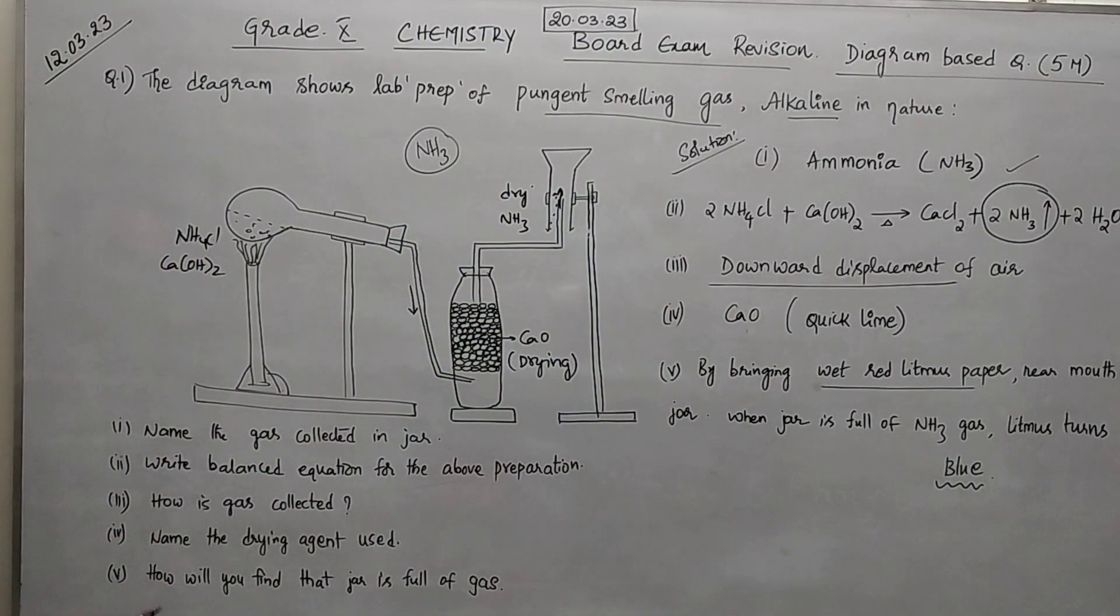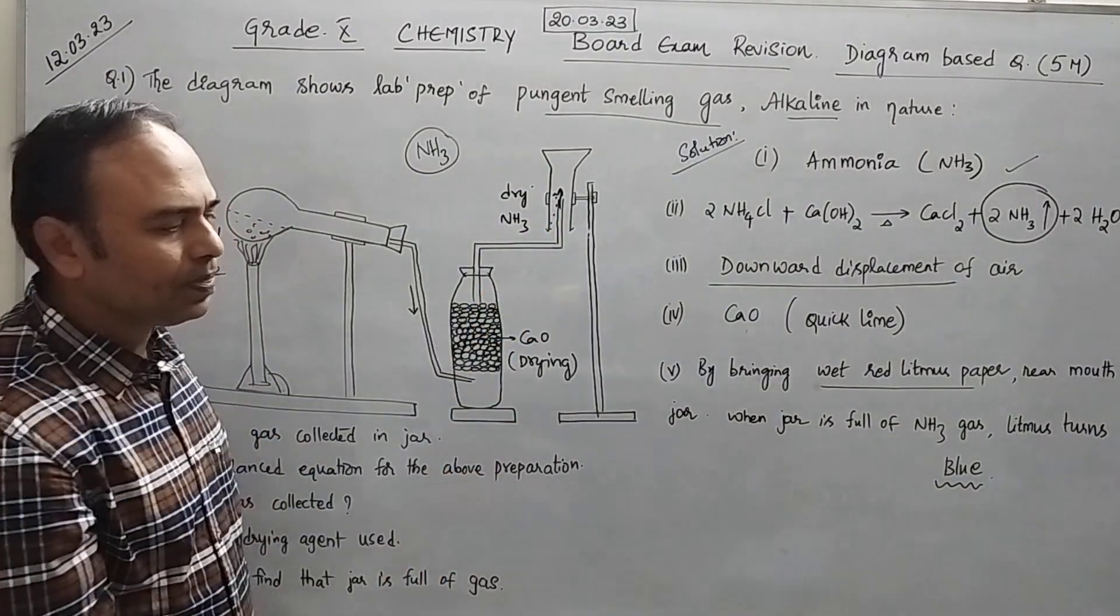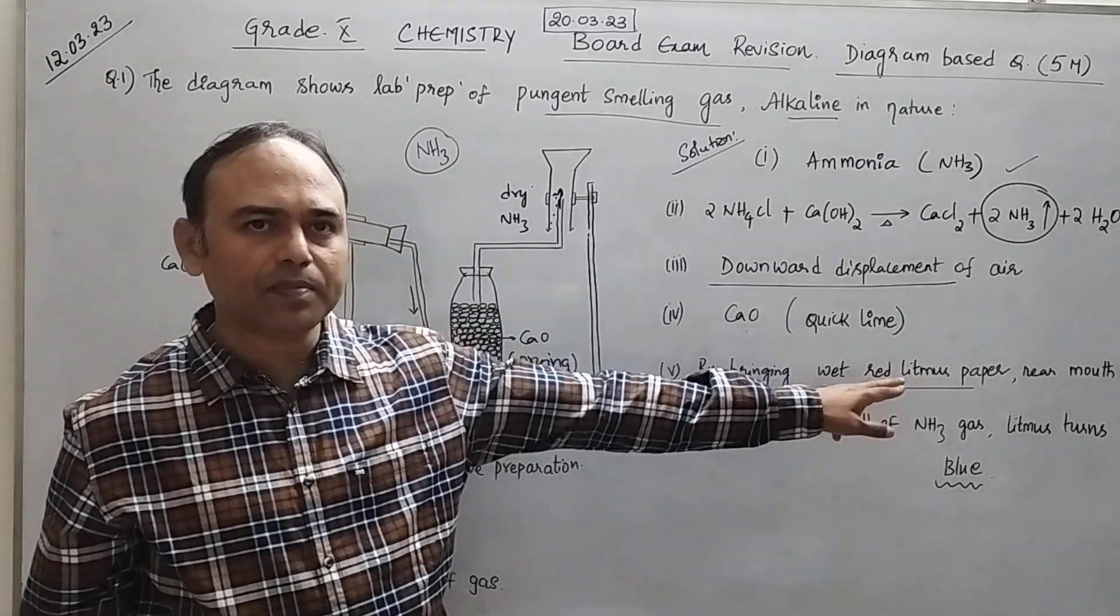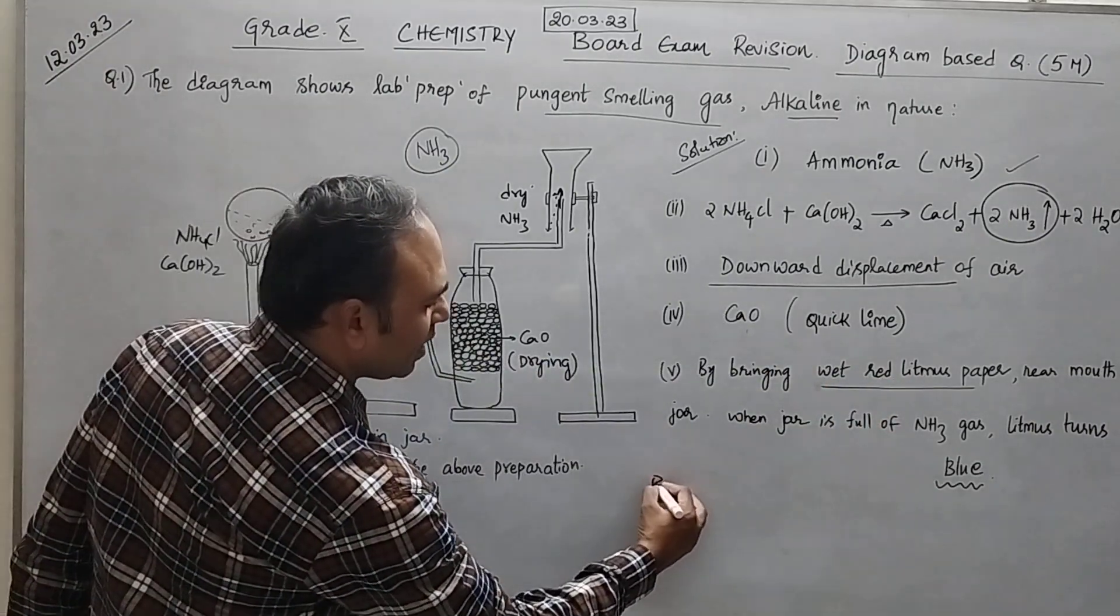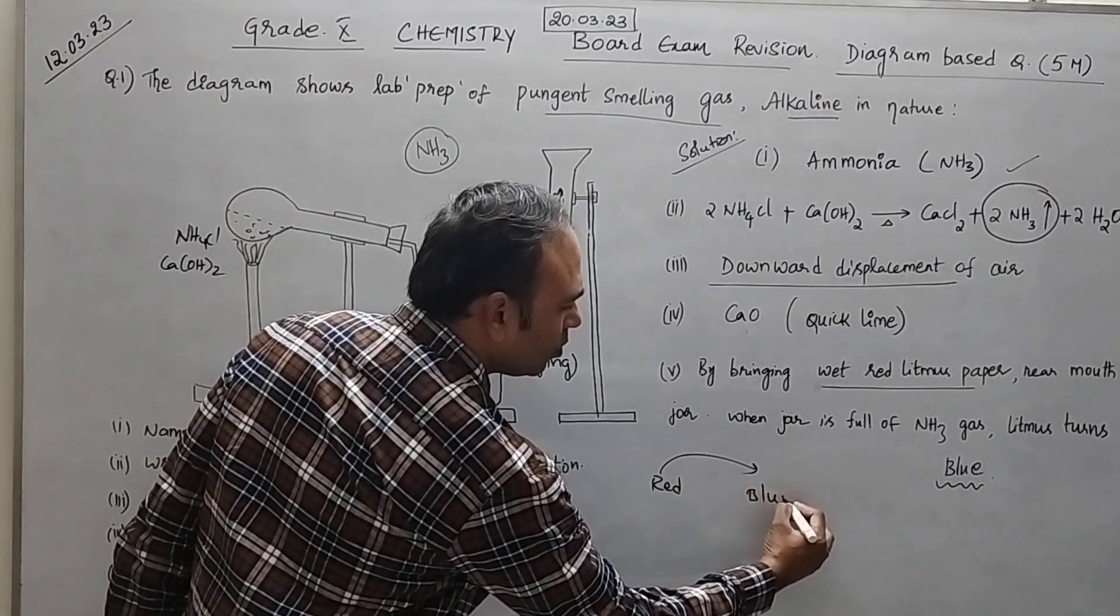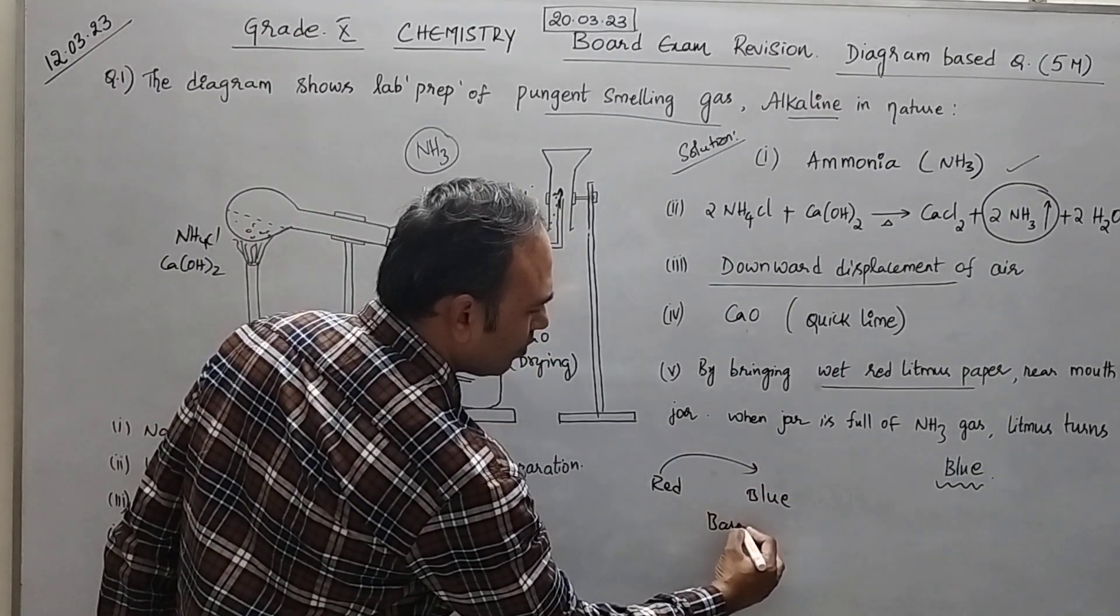Now how will you find that the jar is full of gas? So how do you find this? Important thing is you have to take wet red litmus paper. Now you know that if you take wet red litmus paper it will convert into blue if at all you are having a base.